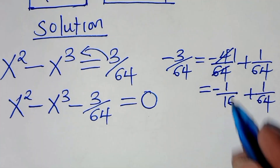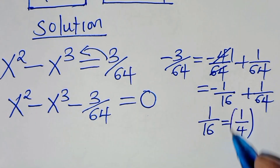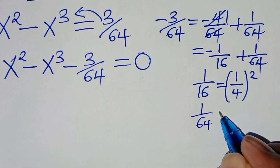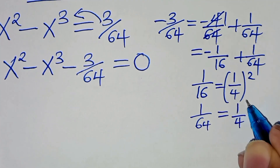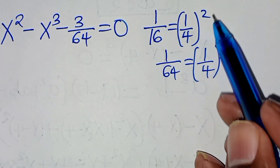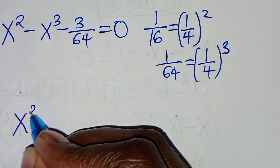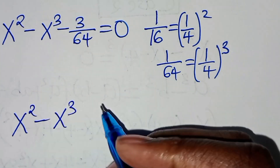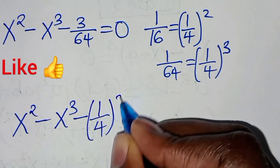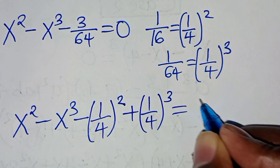Now, we have that 1 over 16 is the same thing as 1 over 4 raised to the power of 2. Now, substituting 1 over 16 with (1 over 4) squared, and 1 over 64 with (1 over 4) cubed, we have x squared minus x cubed, then subtract (1 over 4) squared, plus (1 over 4) cubed, this is equal to 0.